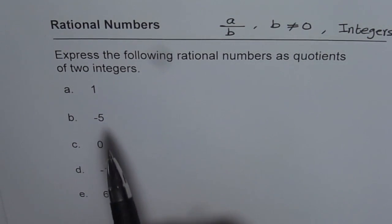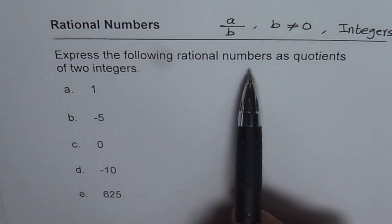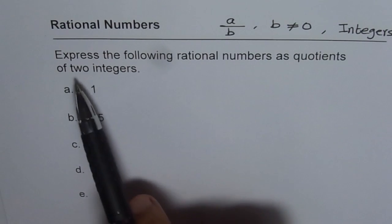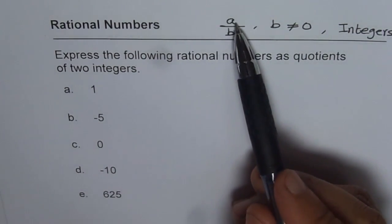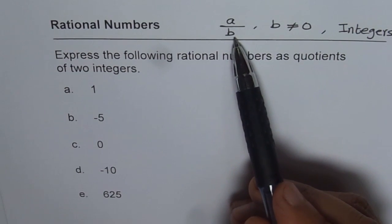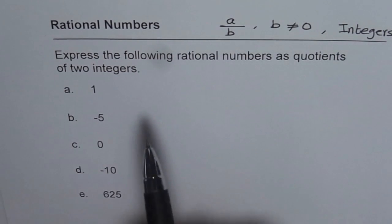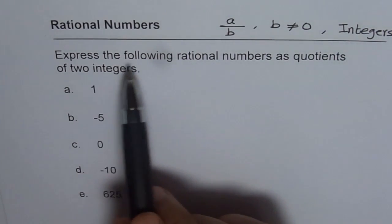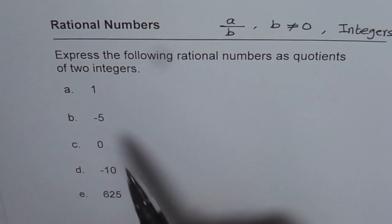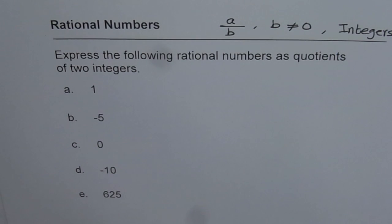We have a question here which says: express the following rational numbers as quotients of two integers. That is what we call quotients - one divided by the other. Remember, these numbers written here are also rational numbers. Whole numbers and integers are also rational numbers. You will see how.